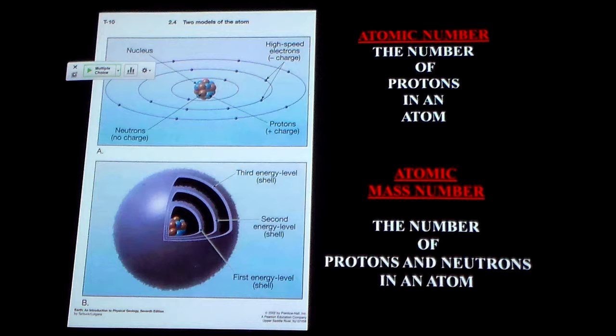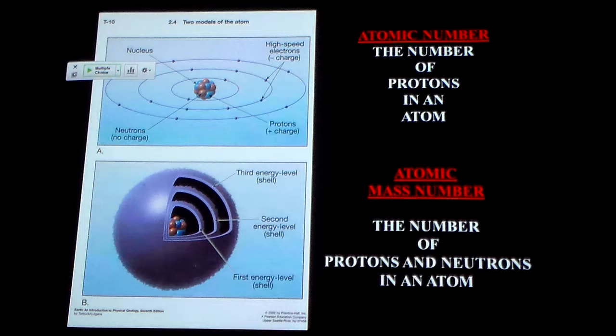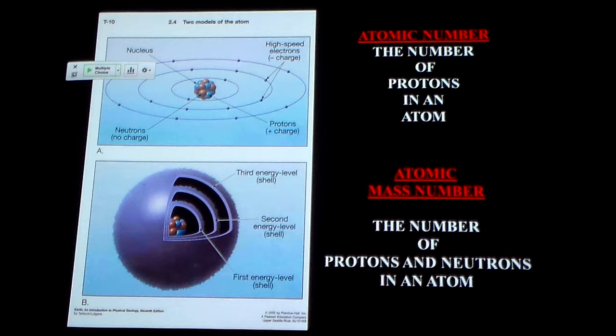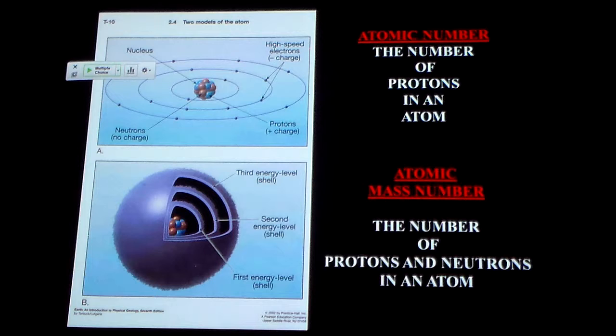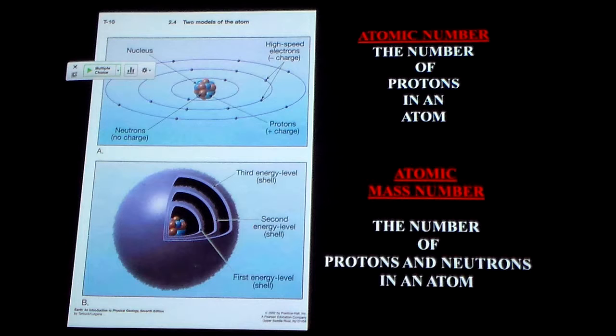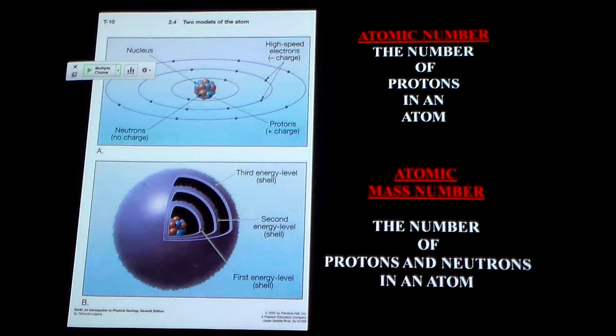Two numbers set everything up in the periodic table. The first is the atomic number. That is simply the number of protons in the nucleus. The very simplest atom is hydrogen. It's got one proton in the nucleus, and that means it's got one electron buzzing around it. The next most complex thing is helium. I've got two protons in the nucleus with two electrons.